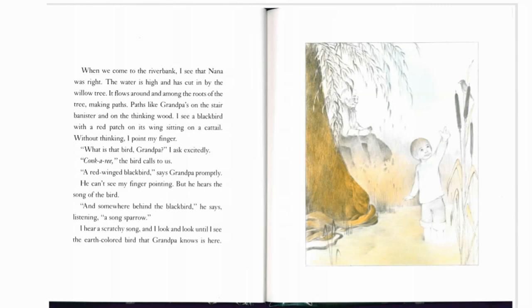When we come to the river bank, I see that Nana was right. The water is high and has cut in by the willow tree. It flows around and among the roots of the tree, making paths — paths like grandpa's on the stair banister and on the thinking wood. I see the blackbird with a red patch on its wing, sitting on a cattail. Without thinking, I point my finger. What's that bird, grandpa? I ask excitedly. The bird calls to us. A red-winged blackbird, says grandpa promptly. He can't see my finger pointing, but he hears the song of the bird. And somewhere behind the blackbird, he says, listening, a song sparrow.